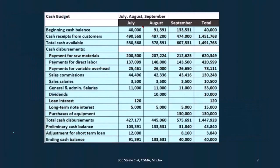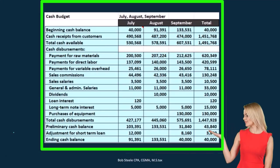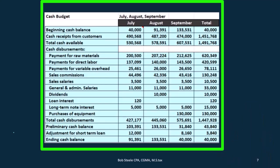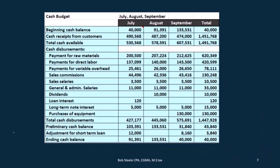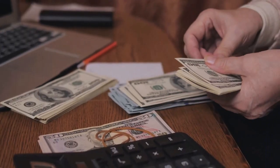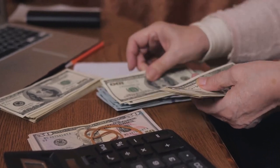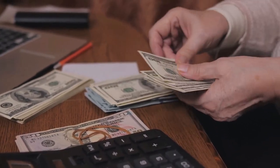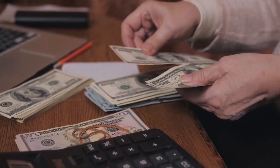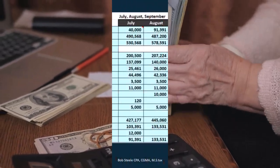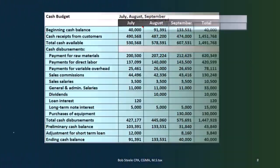We then made the cash budget using many of those pieces. Now we're going to move forward to our major financial statements — the balance sheet, the income statement, and the statement of cash flows. We're going to use the next calculation, the cost of goods manufactured, to help us with the income statement, specifically to get the cost of goods sold.